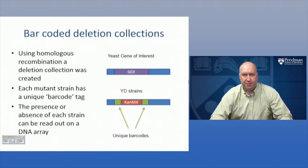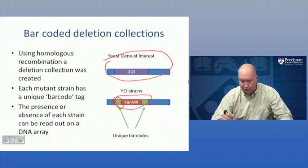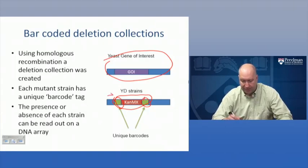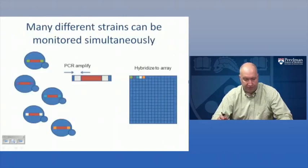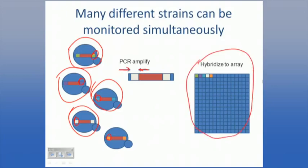The reverse genetics in yeast uses barcoded deletion collections with homologous recombination. You take a gene of interest and target it with homologous recombination to disrupt the gene - in this case with a kanamycin cassette, which is flanked by two barcodes unique for each strain of interest. Many different strains can be monitored simultaneously. Here we have different yeast strains denoted by different color barcodes. You design PCR primers that flank the barcodes, amplify them, hybridize them to a DNA array, and read out the presence of each strain with these intended features.